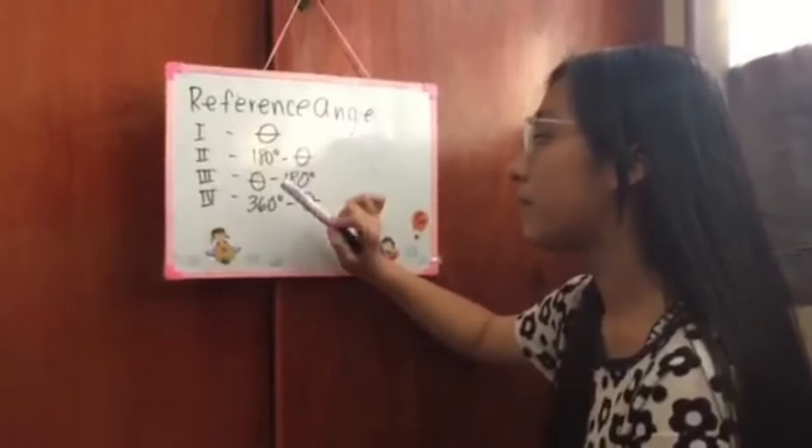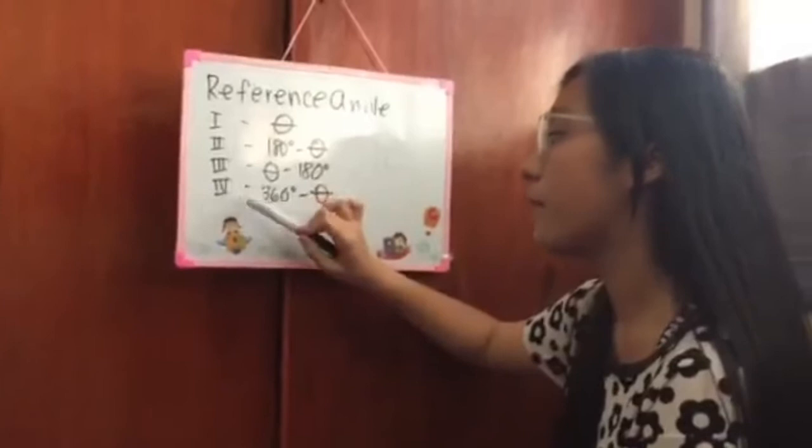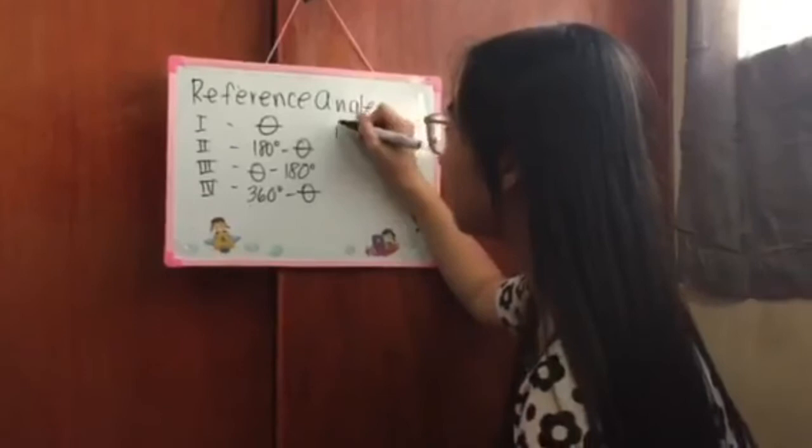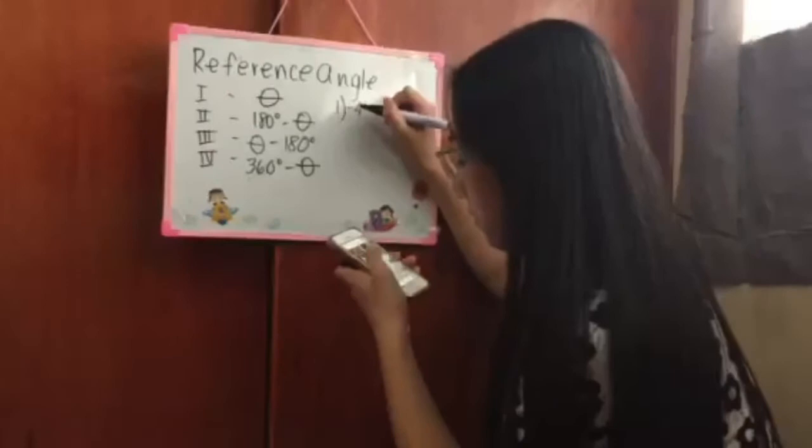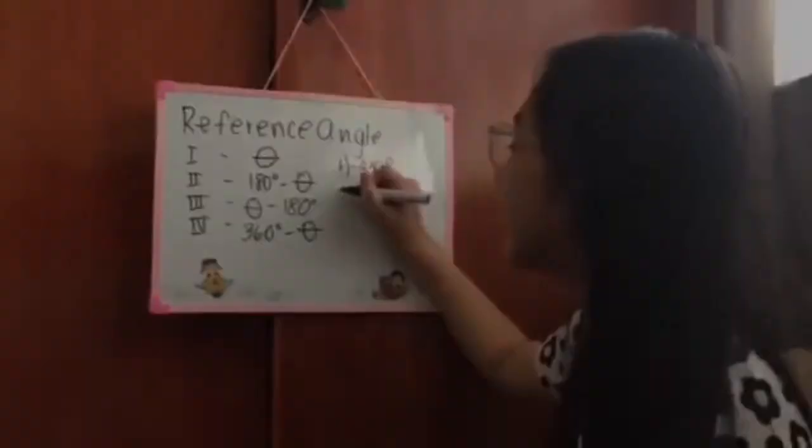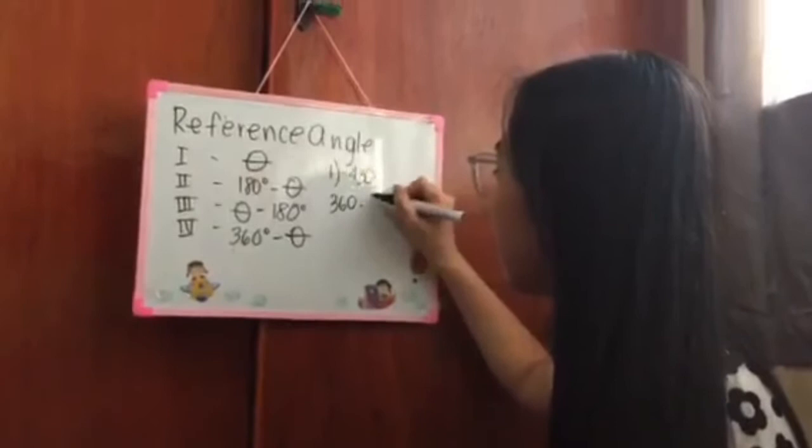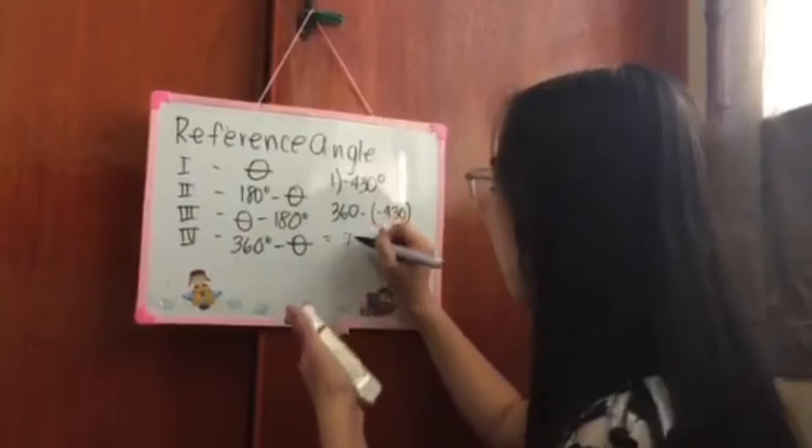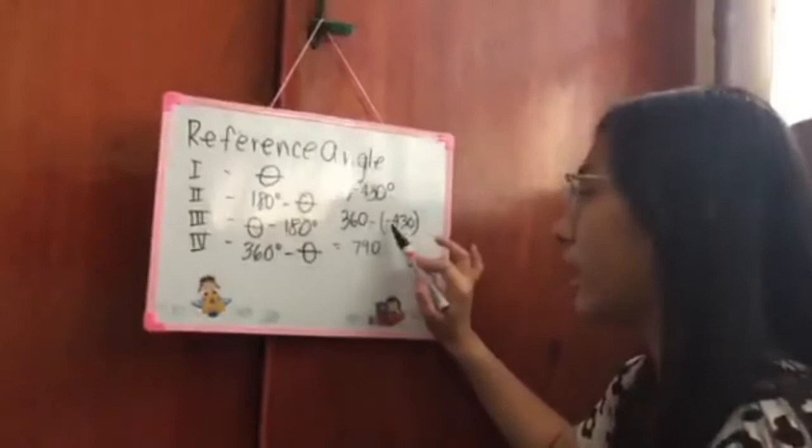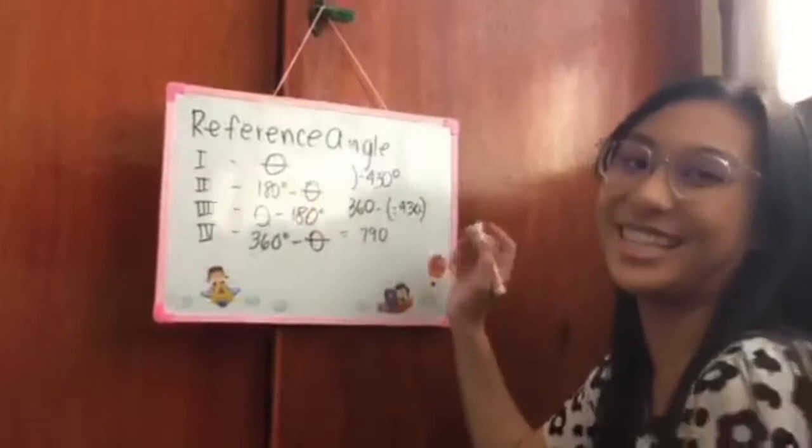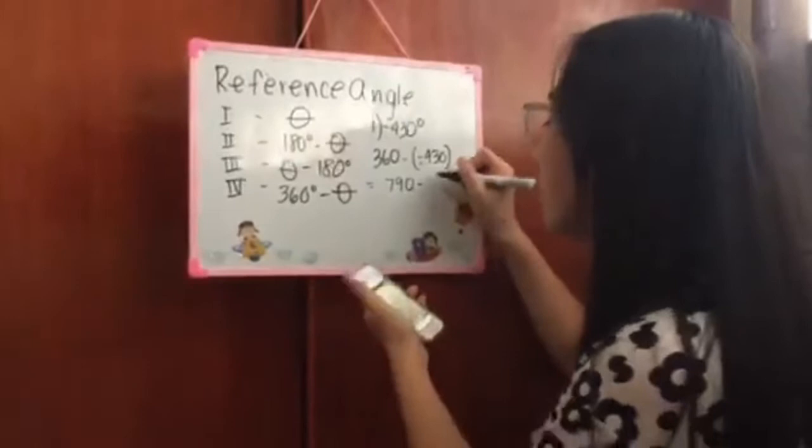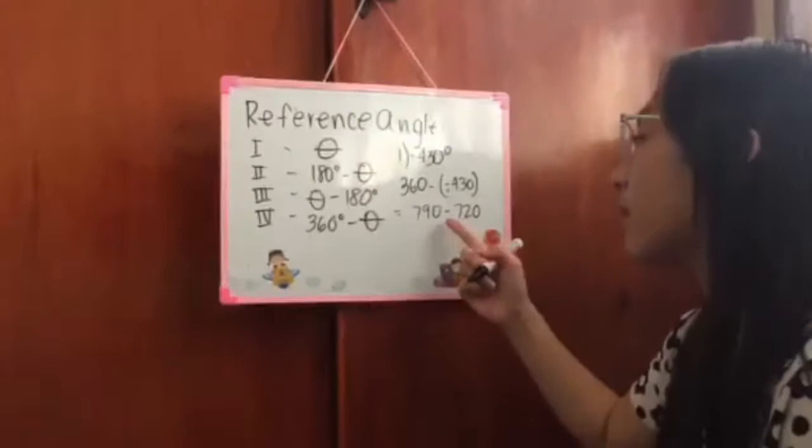The given is negative 430 degrees. It's quadrant 4 because it exceeded 360. 360 minus negative 430 equals 790. Why 790? Because this is minus and this is negative. So minus plus negative equals plus. 790 minus 720 because 790 exceeded two rotations.